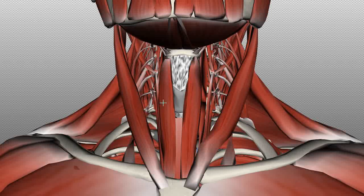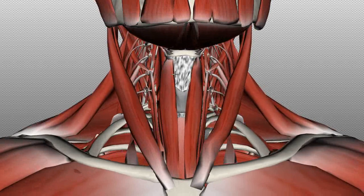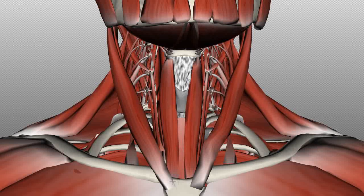The lower portion of this muscle is called the sternothyroid because it attaches from the sternum to the thyroid. This muscle draws the larynx downwards. The sternothyroid and the thyrohyoid run in continuity, lying just deep to the omohyoid and sternohyoid.